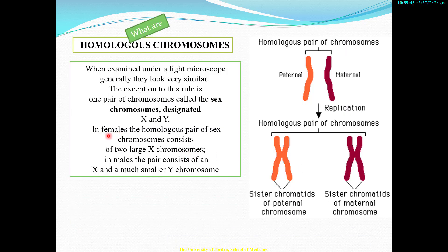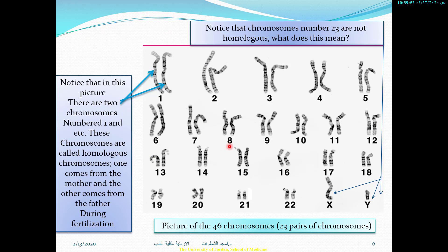In females, however, the homologous pair of sex chromosomes consists of two large X chromosomes. So had this been for a female, you would have seen another X instead of Y. In females, everything goes in order — even their chromosomes are identical from number 1 all the way to number 23.